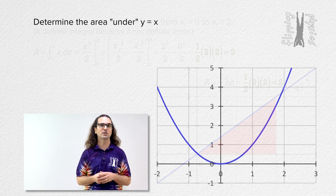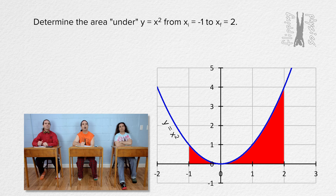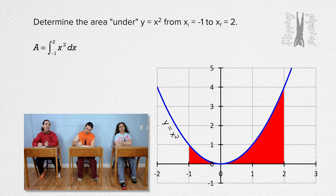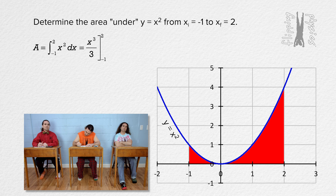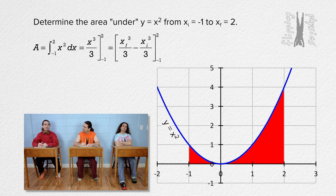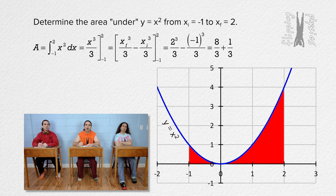Billy, please determine the area under the function y equals x squared from x equals negative 1 to x equals 2. The area equals the integral from negative 1 to 2 of x squared with respect to x. Y equals x squared is a parabola which is concave up and is the blue line in the graph. The area under the curve from negative 1 to 2 is illustrated in red in the graph. The integral of x squared with respect to x equals x cubed over 3, still from negative 1 to 2. We put in the final minus initial: x final cubed over 3 minus x initial cubed over 3. Substituting in gives us 2 cubed over 3 minus negative 1 cubed over 3, which equals 8 over 3 plus 1 over 3, which equals just 3. The area under the function y equals x squared from negative 1 to 2 equals 3.